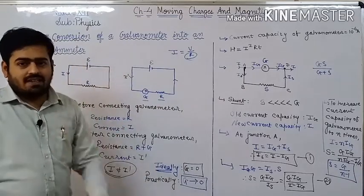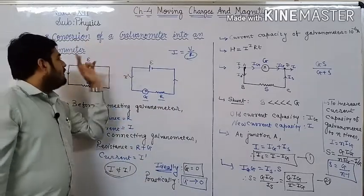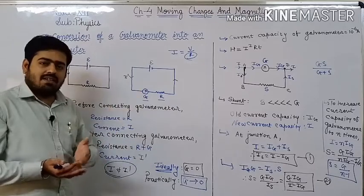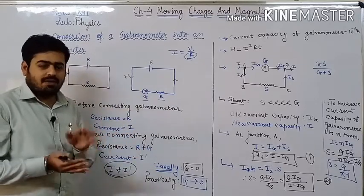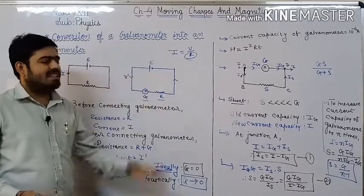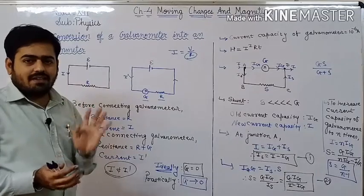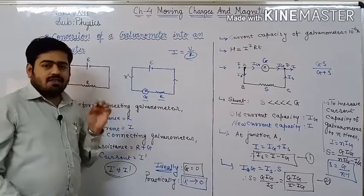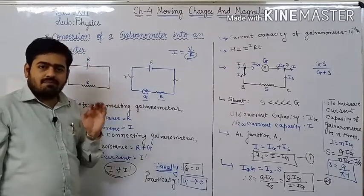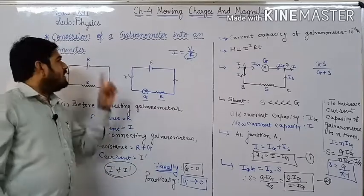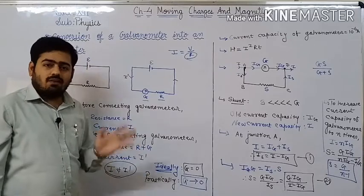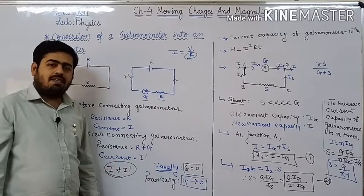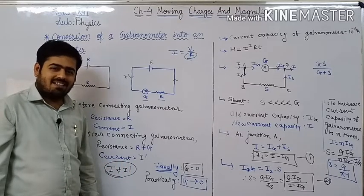So, is conversion of galvanometer into ammeter clear? This way we can convert galvanometer into an ammeter. Ammeter is nothing but a galvanometer with some modifications — connect shunt in parallel, and galvanometer is used as an ammeter. I hope the concept of conversion of galvanometer into an ammeter is now clear to you. Next time, we will study about conversion of a galvanometer into a voltmeter. With this, I am ending today's lecture. See you in the next lecture — bye bye, thank you.